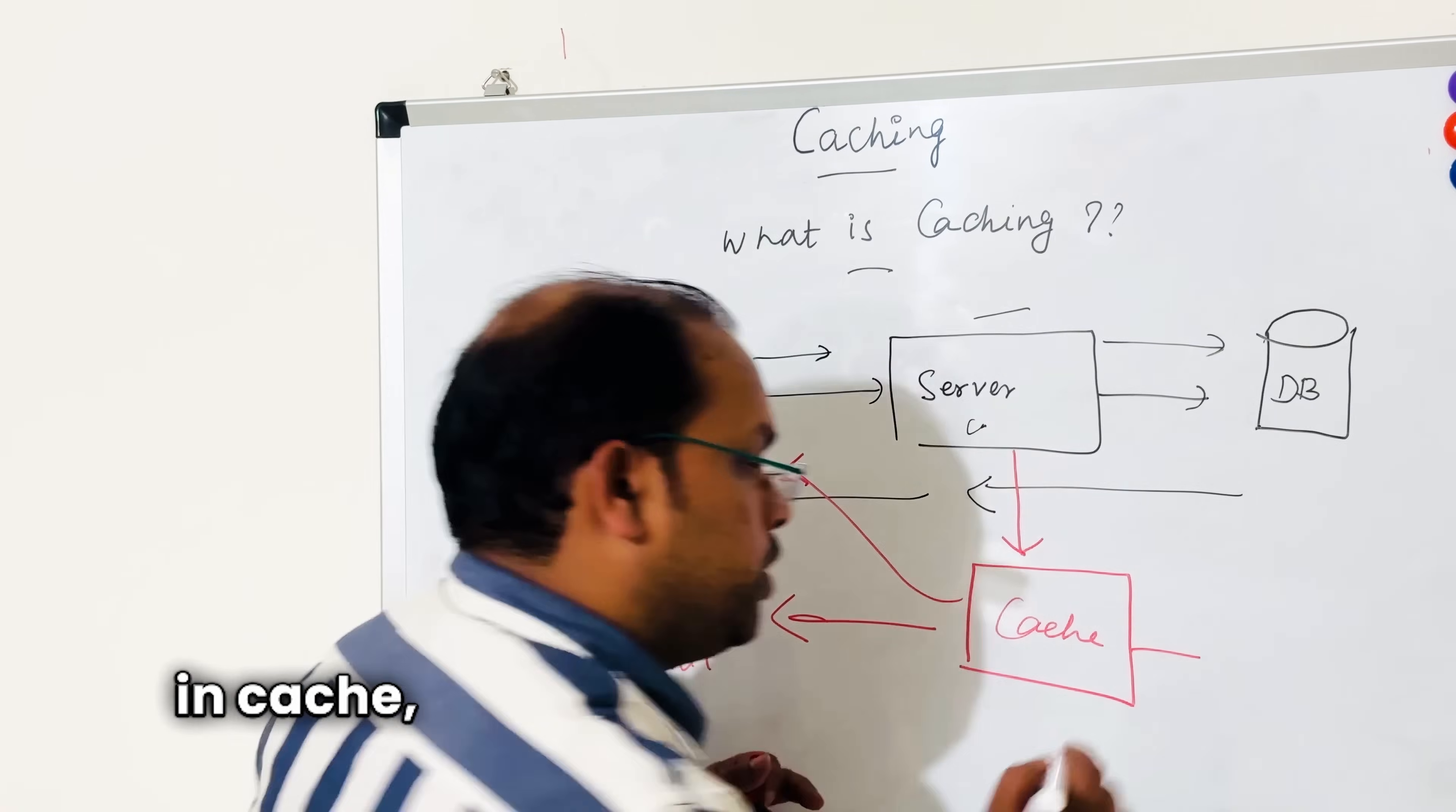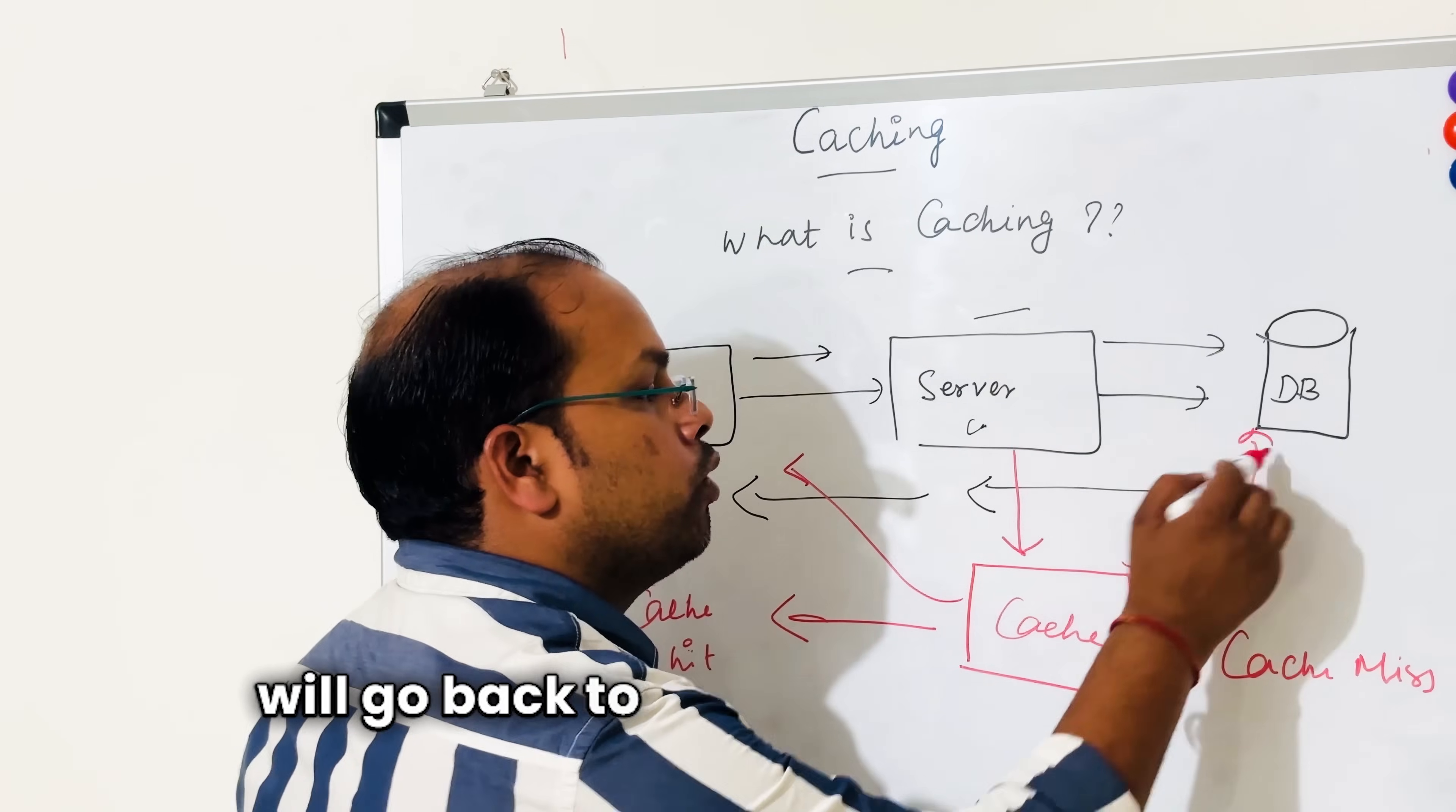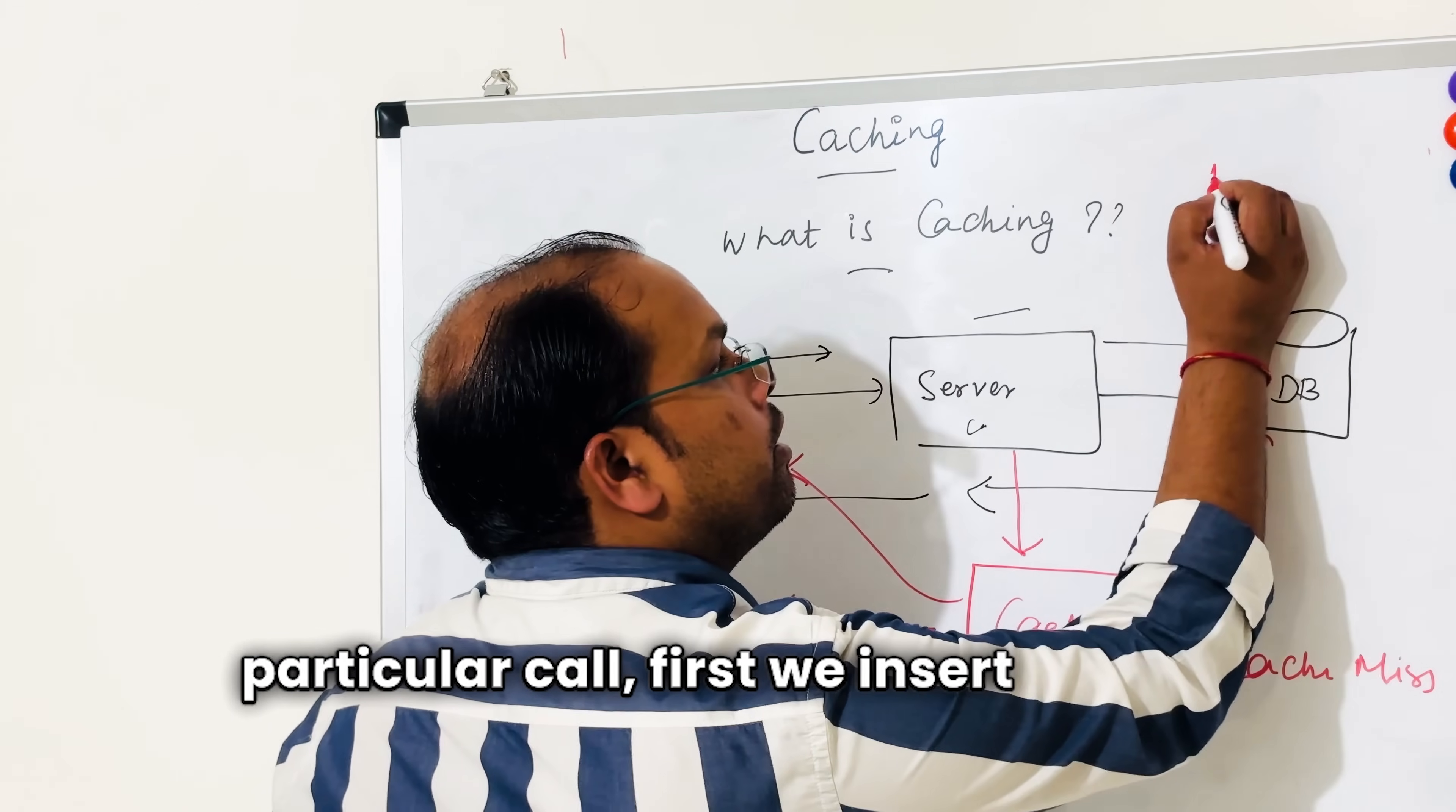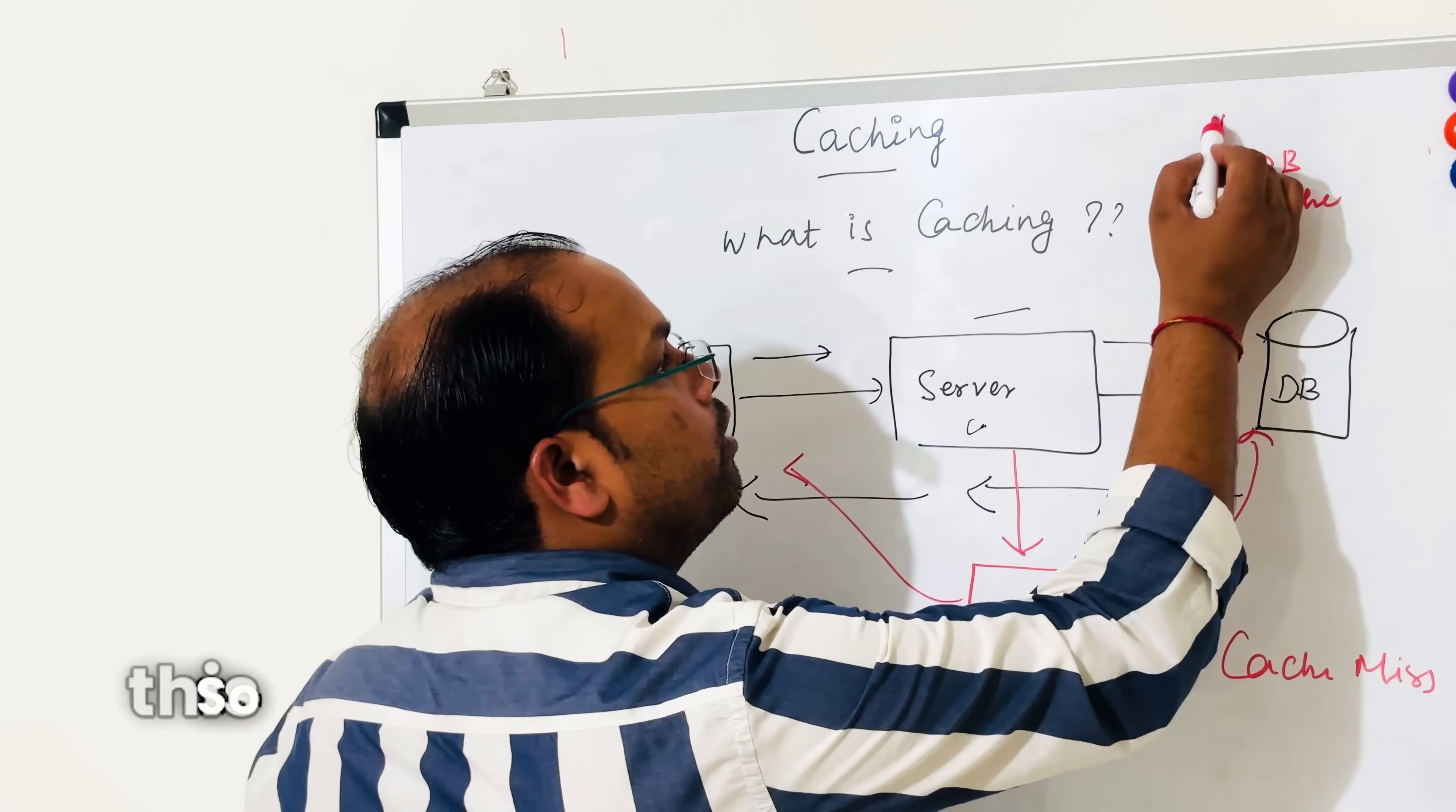Now another case: if data is not found in cache, that is called a cache miss. In this particular scenario, the call will go back to the database. So data will be fetched from the DB, and in that particular call, first we insert data in the database, and at the fallback mechanism, we store data in cache.